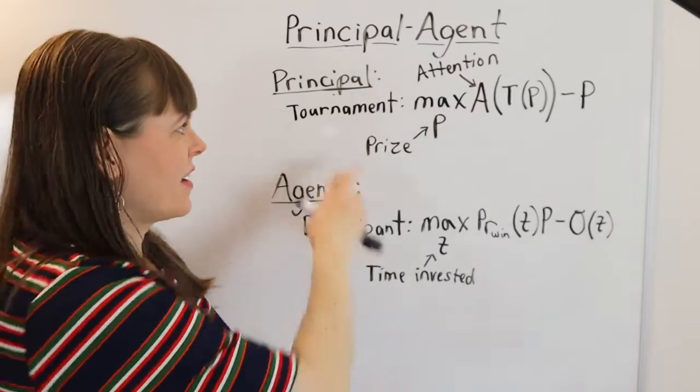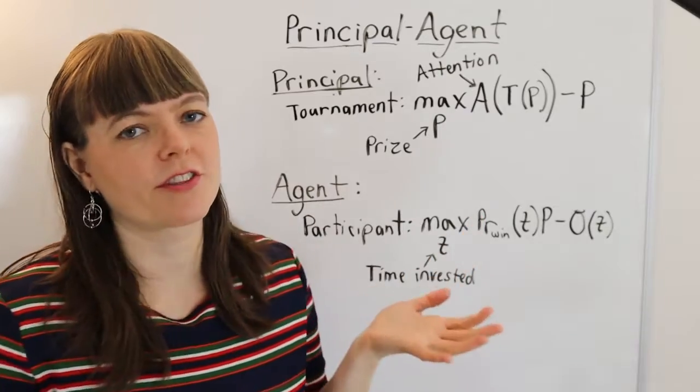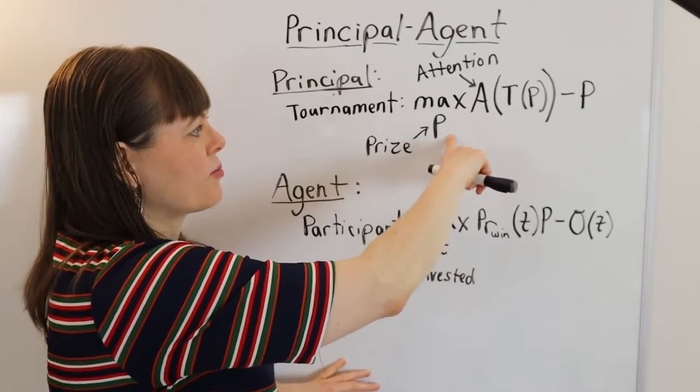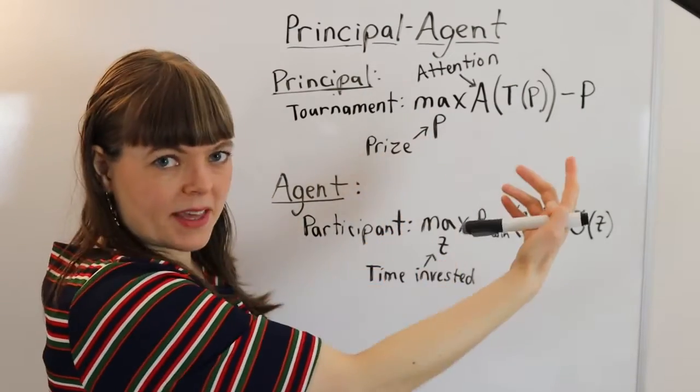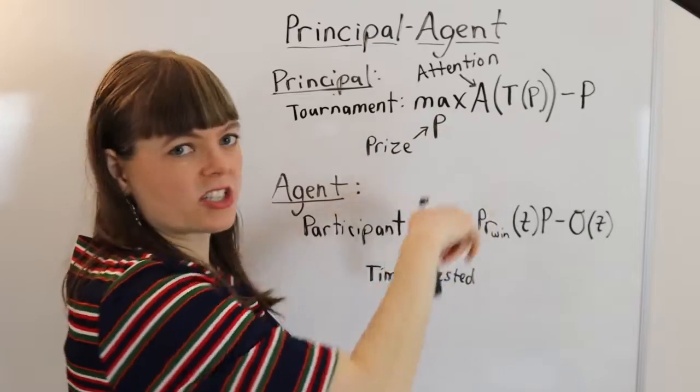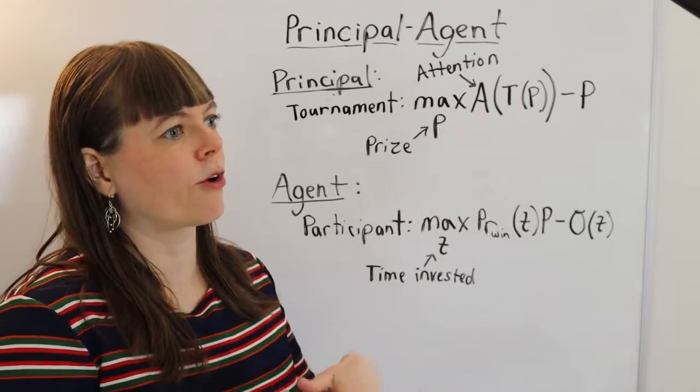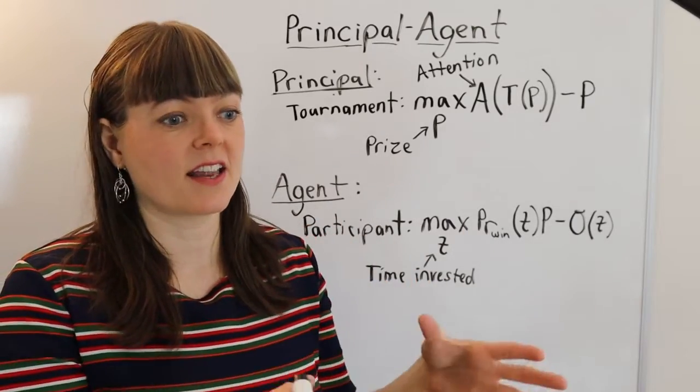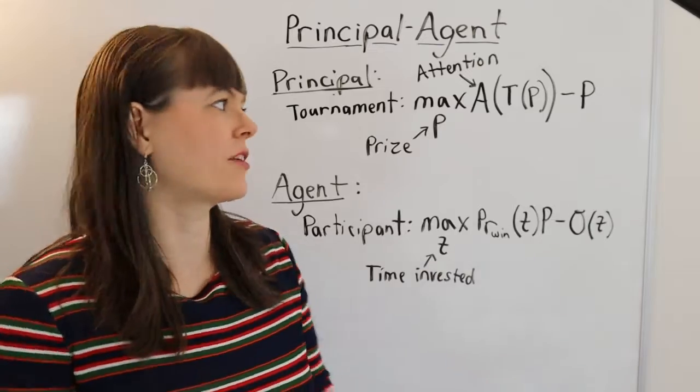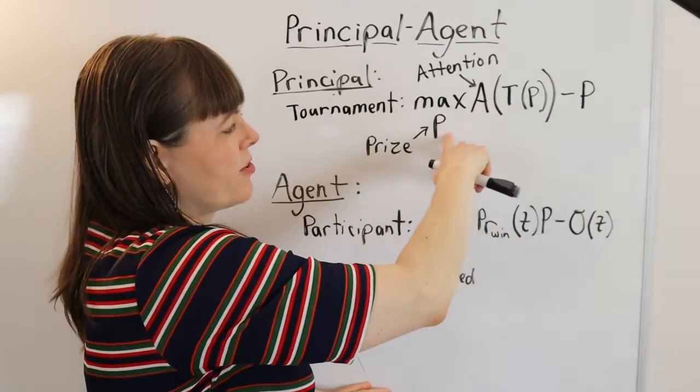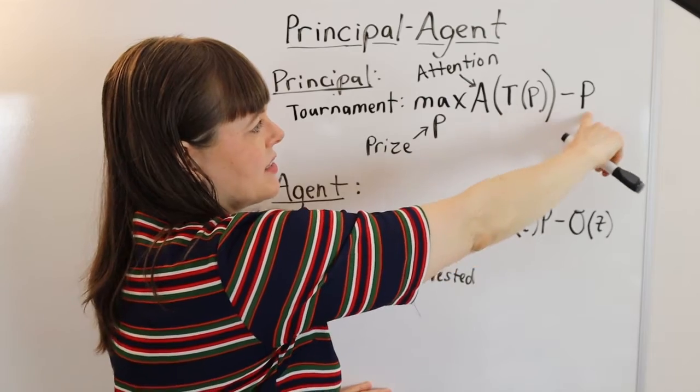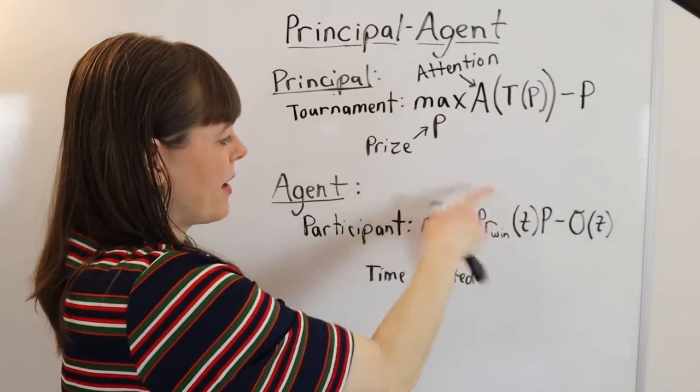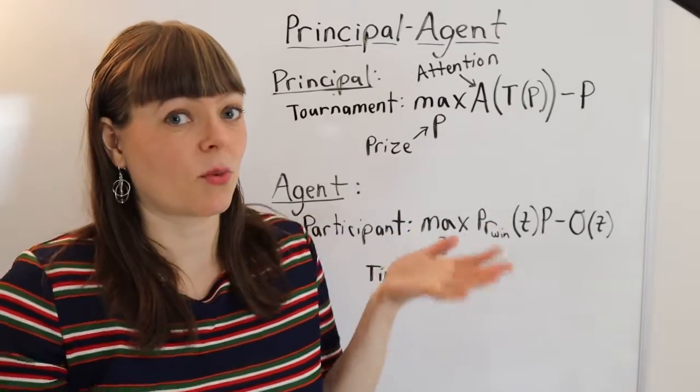Here we have a tournament. And of course, the decision maker here is like the manager of the tournament or whoever's putting it on. They have to decide how big should the prize be. So prize is P. And they're trying to optimize something. I'm going to say this is attention to the tournament's cause. Oftentimes, tournaments are for not-for-profit causes. Or sometimes the tournaments are for investing in a product that you're putting together that will have value to others. But we're just going to say, attention is what they're trying to optimize, minus the money they spend on the prize, where attention depends on the total time that people entering the tournament invest in whatever it is they're doing.